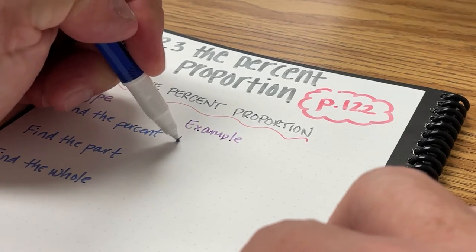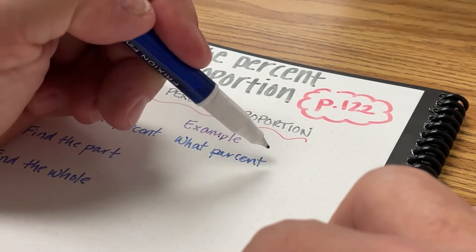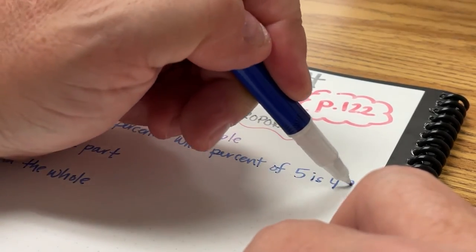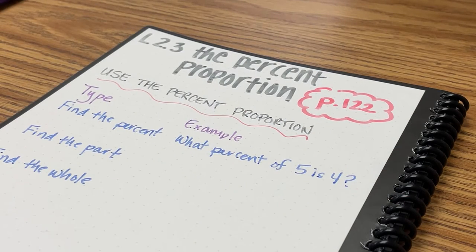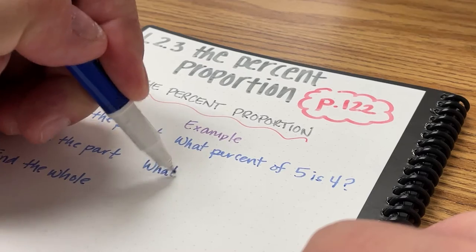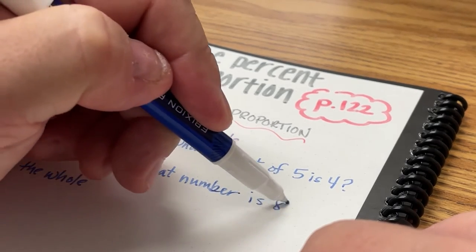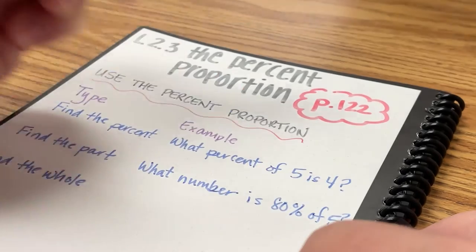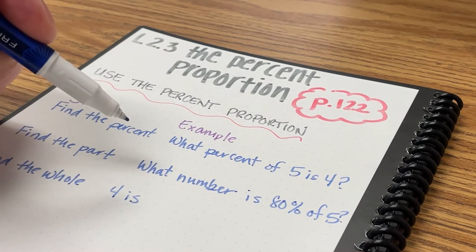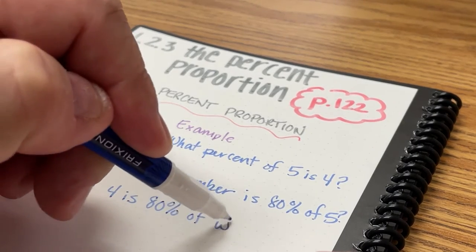An example of finding the Percent might be: What percent of five is four? An example of finding the Part could be: What number is 80% of five? An example of finding the Whole would be: Four is 80% of what number?